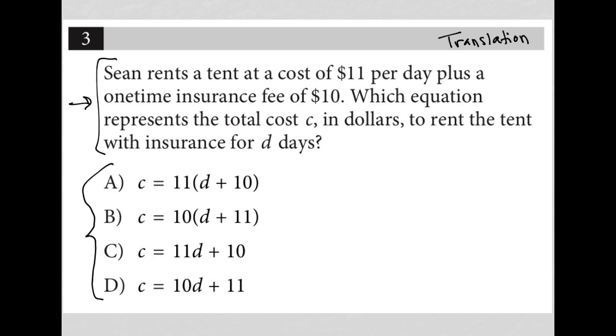So the first sentence here says, Sean rents a tent at a cost of $11 per day, plus a one-time insurance fee of $10.